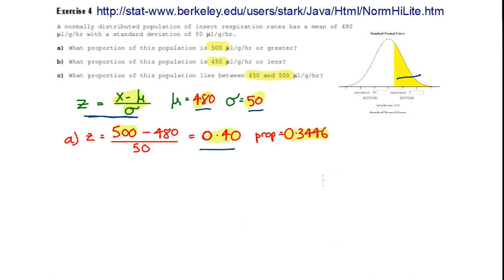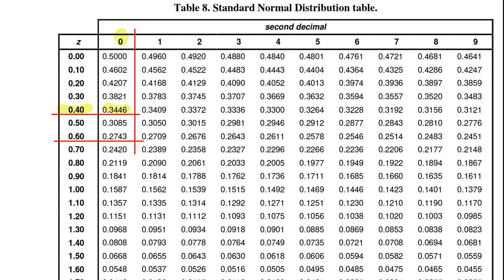Moving on to the second question, and inserting the value 450 into the equation, we get a value of minus 0.6. Over to the table of standard normal distribution, and here we need the 0.6 row, again the 0 column.